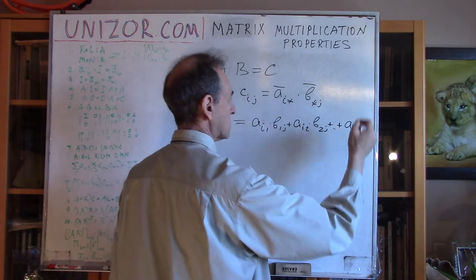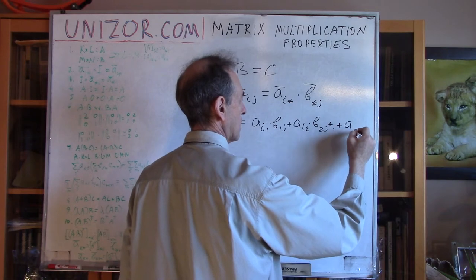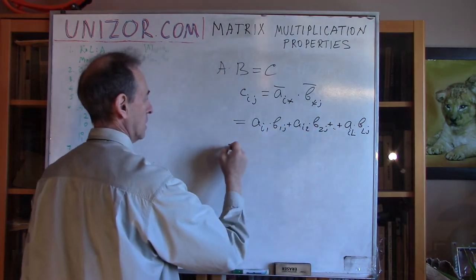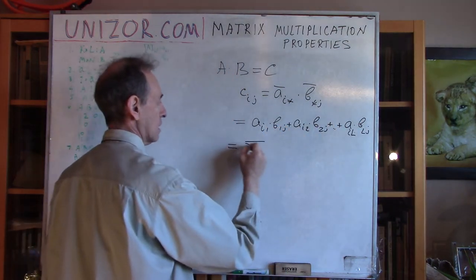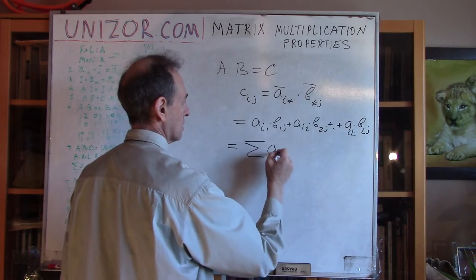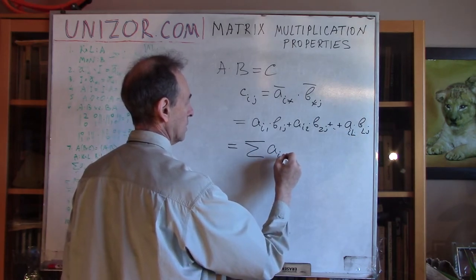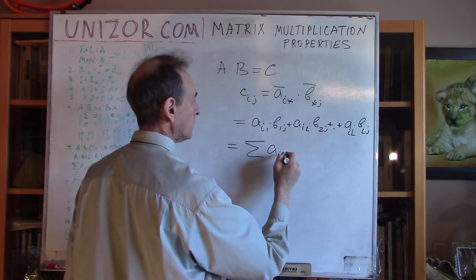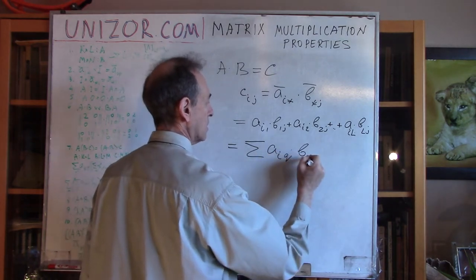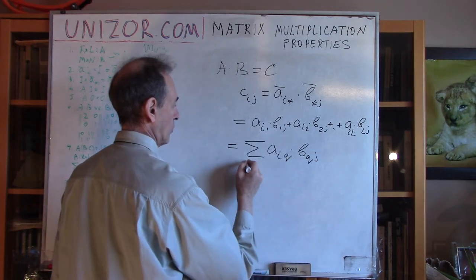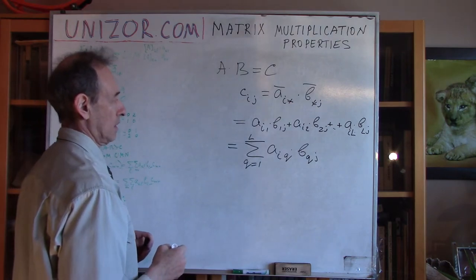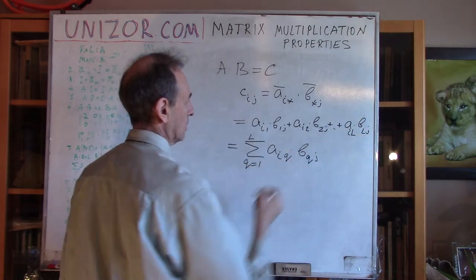Continuing to the last term: plus A_iL times B_Lj. In other words, I can use the expression with the Greek symbol sigma — capital sigma — which is the same thing: the sum over index q of A_iq times B_qj, where index q runs from one to capital L. This is just a shorter notation for the same thing, and I'm going to use this notation.